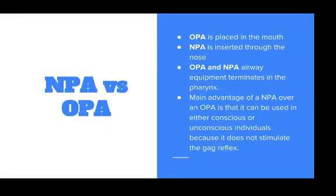The OPA is placed in the mouth while an MPA is inserted through the nose. Both airway devices terminate in the pharynx. The main advantage of an MPA over an OPA is that it can be used in either conscious or unconscious individuals because it does not stimulate the gag reflex.